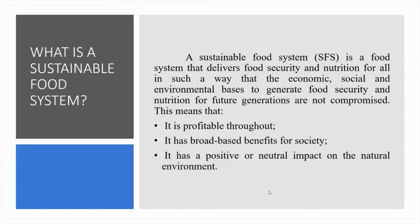What is a sustainable food system? A sustainable food system is a food system that delivers food security and nutrition for all in such a way that the economic, social and environmental basis to generate food security and nutrition for future generations are not compromised. This means that it is profitable throughout — economic sustainability — it has broad-based benefits for society — social sustainability — and it has a positive or neutral impact on the natural environment — environmental sustainability.